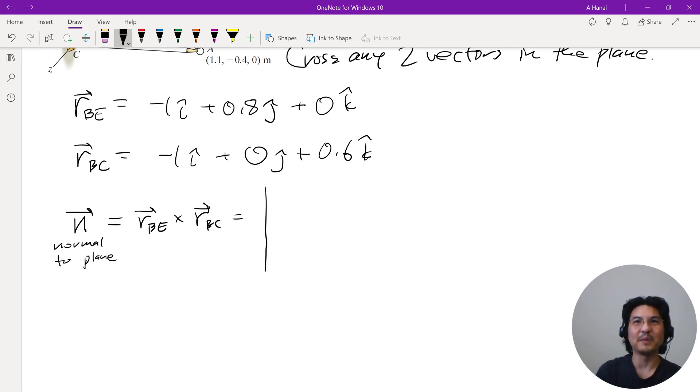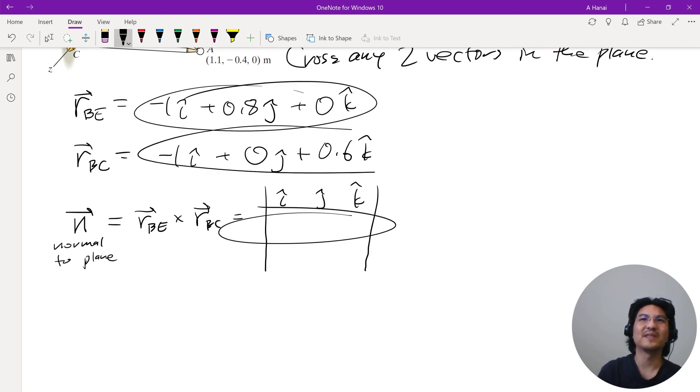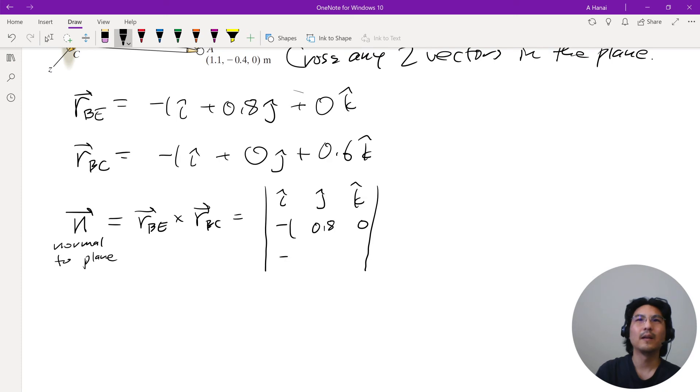So you set up the matrix determinant like this and then the first vector goes here, second vector goes here. Let's do this in the i direction: ignore this, multiply this like a fish, so 0.8 times 0.6 minus 0. In the j direction it's negative, so I gotta be careful. Ignore these, multiply these like a fish, so negative 0.6 minus 0.